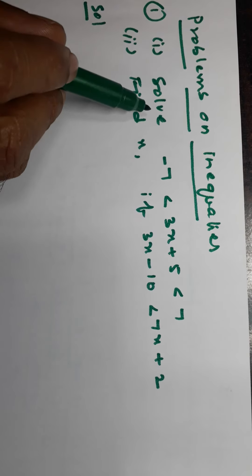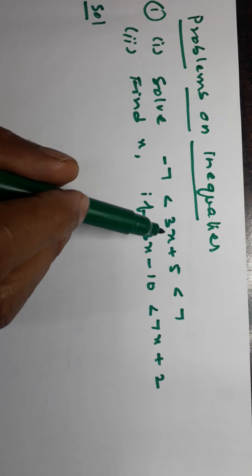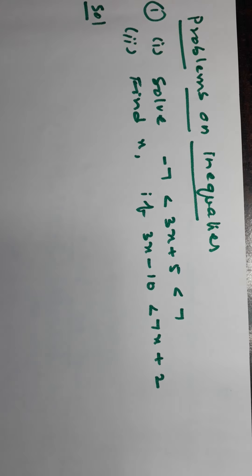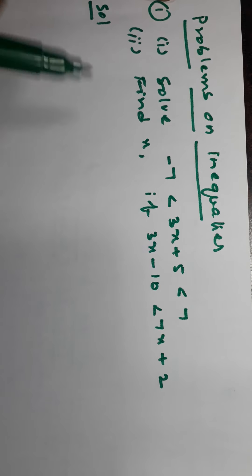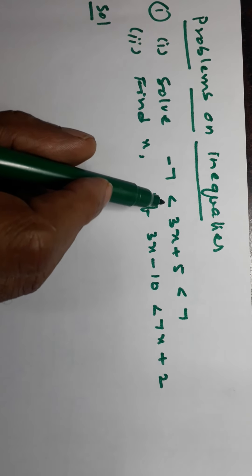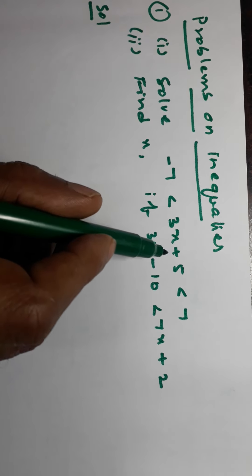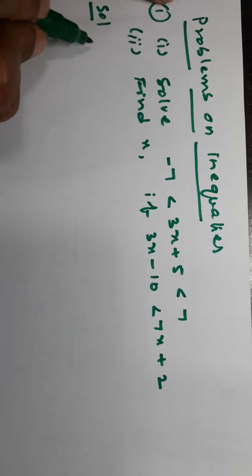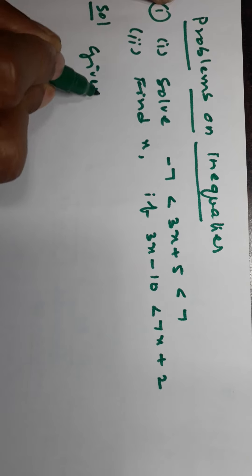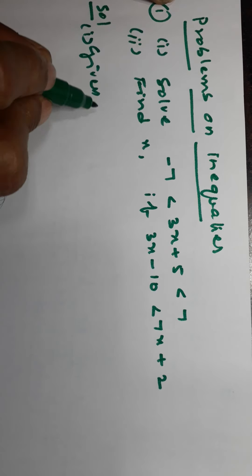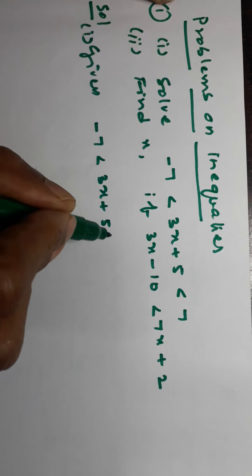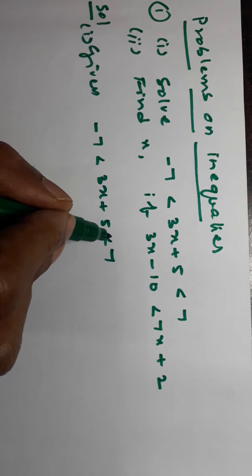Let us see the solution. For the first problem, 'solve' means find the x-values of the inequality. The given inequality is: -7 < 3x + 5 < 7.